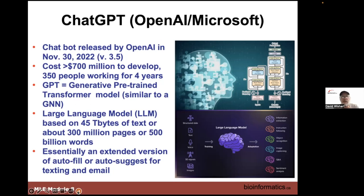Large language models like ChatGPT use huge amounts of data — billions of words. To train ChatGPT required massive computers with specialized GPUs running for months to even years to complete the training. As a generative model, what it does is generate text or words. You can see generative models in your auto-suggest or auto-fill on cell phones when texting — it takes the first letter or two and suggests a word, or suggests phrases based on frequency.